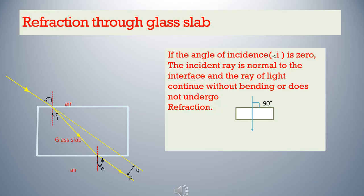If the ray of light falls perpendicularly on the surface — that means along the direction of the normal — in that case the angle of incidence is zero and the incident ray is normal to the interface. The ray of light continues without bending and does not undergo any refraction.